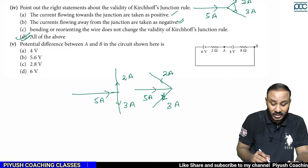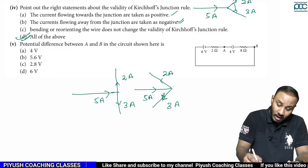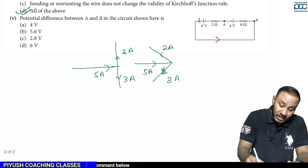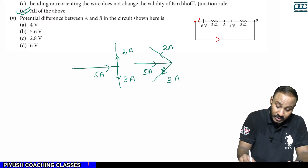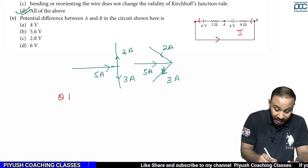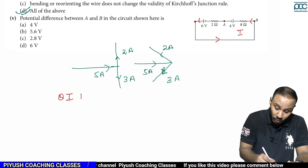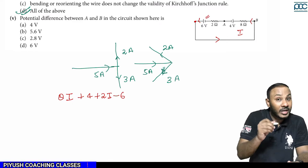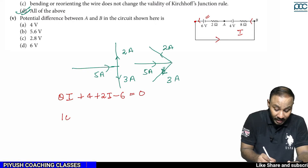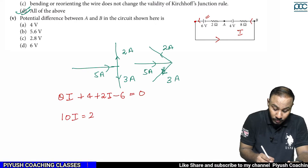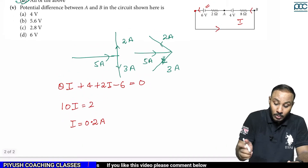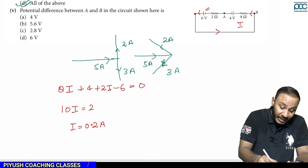Find the potential difference between A and B in the given circuit. First, apply Kirchhoff's rule according to the current directions. Starting here, assuming current I: 8I in the direction of current is positive, plus 4, plus 2I, minus 6 — because here we get the negative terminal — equals zero. So 10I equals 2, giving I equals 0.2 ampere.